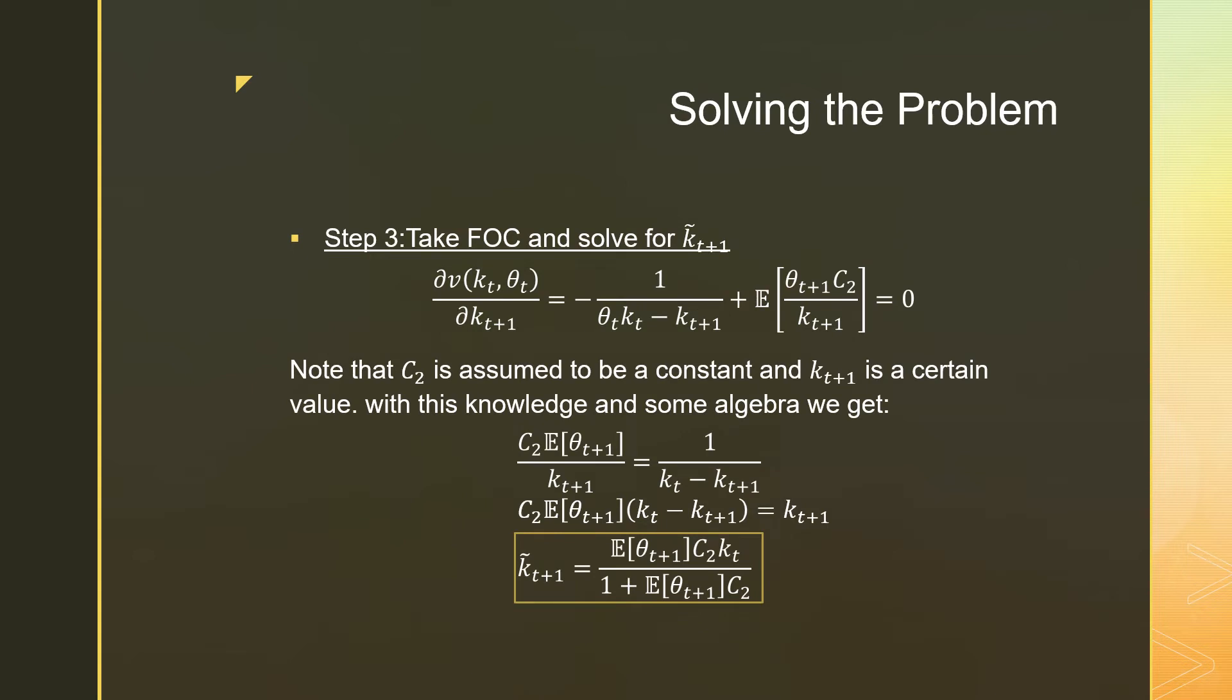Step number three is that we're going to take our first order conditions and solve for k_{t+1}. Note that C_2 is assumed to be a constant, and K_{t+1} is a certain value, meaning that there's no uncertainty regarding the cake that you save. So this is a point of confusion about how I'm able to pull this expectation operator through there and just have it on theta_{t+1}.